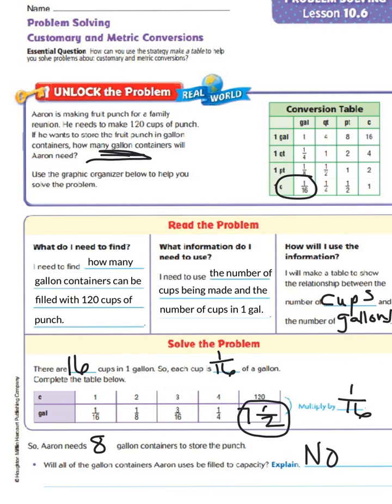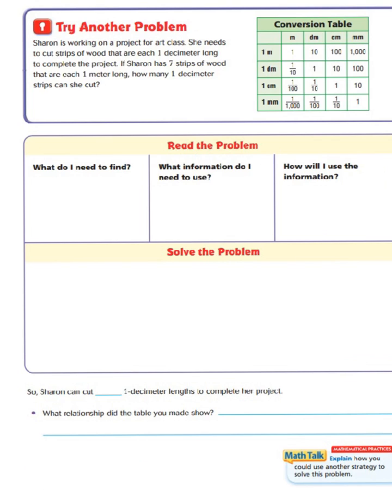But when it asks how many gallon containers will we need, we have to round up to eight-gallon containers, which means that only one or the last container is only going to be half full of punch.